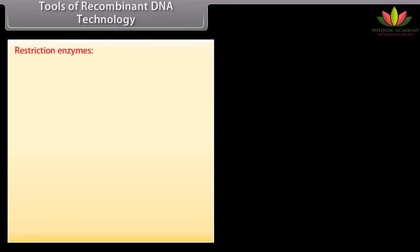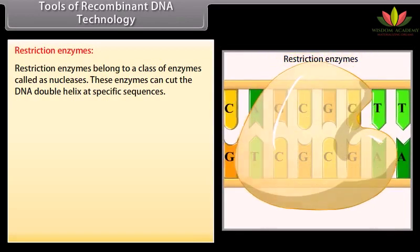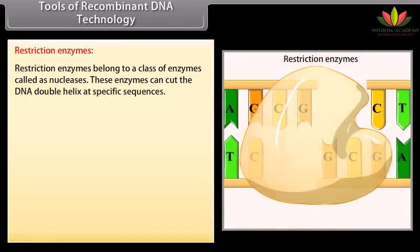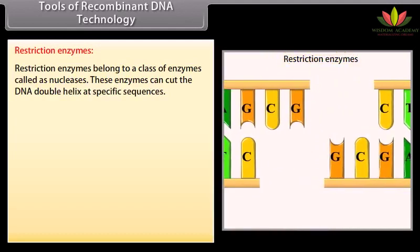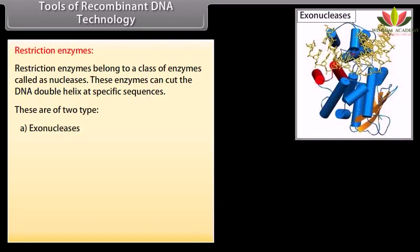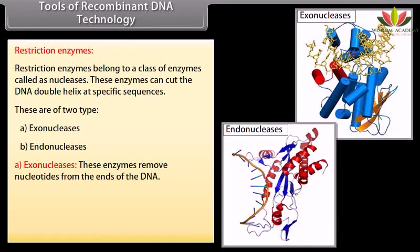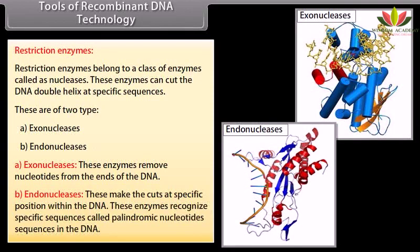Tools of recombinant DNA technology. Restriction enzymes belong to a class of enzymes called nucleases. These enzymes can cut the DNA double helix at specific sequences. There are two types: exonucleases and endonucleases. Exonucleases remove nucleotides from the ends of the DNA. Endonucleases make cuts at specific positions within the DNA. These enzymes recognize specific sequences called palindromic nucleotide sequences in the DNA.